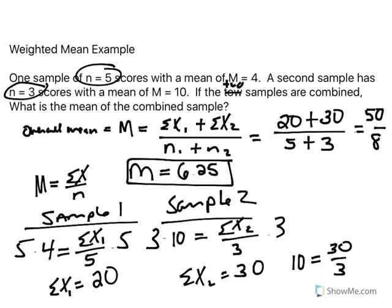Something to note: the mean is weighted by the number of scores. Sample one contributed five scores with mean 4; sample two contributed three scores with mean 10. Because five is greater than three, the overall mean of 6.25 is pulled closer to four than to ten — closer to the distribution that contributed more scores.